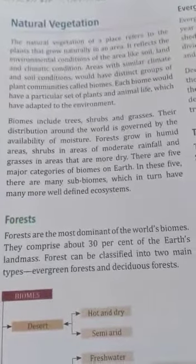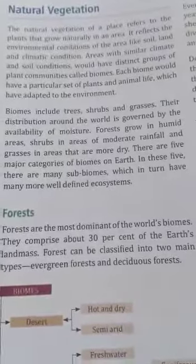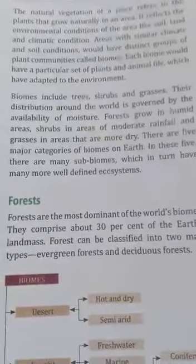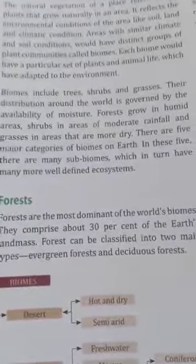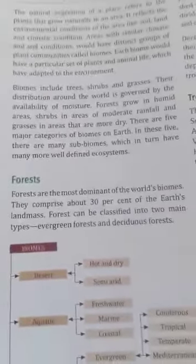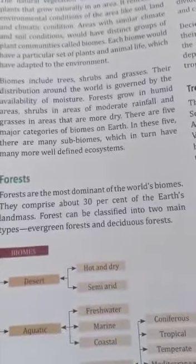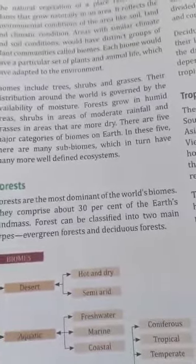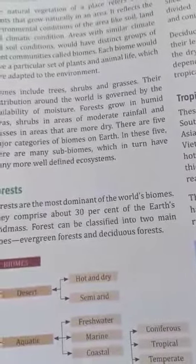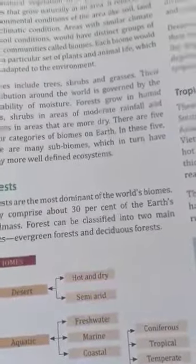We can broadly classify natural vegetation into forests, grasslands and shrubs. Forests are clusters of trees that grow close to each other. A true forest is one in which trees grow so close to each other that their canopies touch and do not let sunlight pass through.